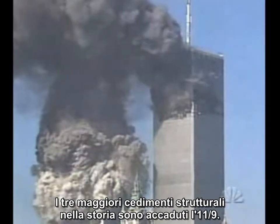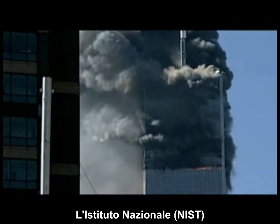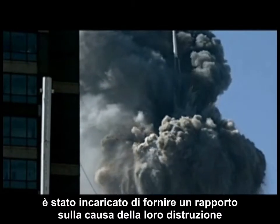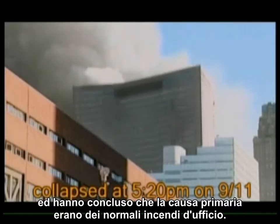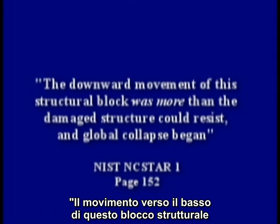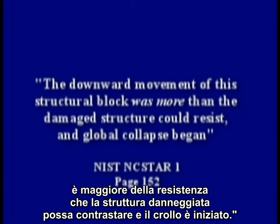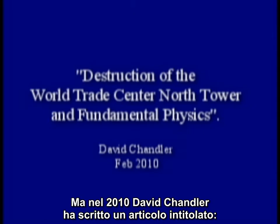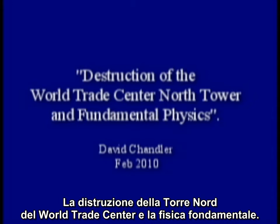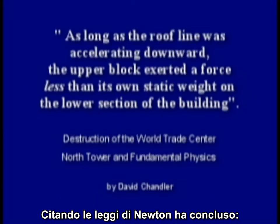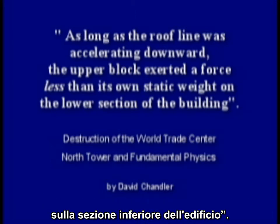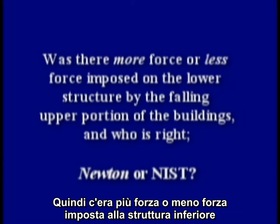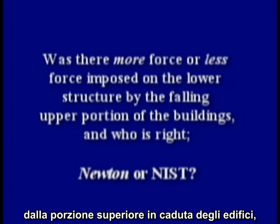The three largest structural failures in history all happened on 9-11. The National Institute of Standards and Technology, or NIST, was tasked with providing a report as to the cause of their destruction, and they concluded that the primary cause was from normal office fires. In their final tower report, NIST wrote: 'The downward movement of the structural block was more than the damaged structure could resist, and the global collapse began.' But in 2010, David Chandler wrote a paper called 'Destruction of the World Trade Center North Tower and Fundamental Physics.' Citing Newton's laws, he concluded that as long as the roof line was accelerating downward, the upper block exerted a force less than its own static weight on the lower section of the building. So was there more force or less force imposed on the lower structure by the falling upper portion of the buildings? And who is right?